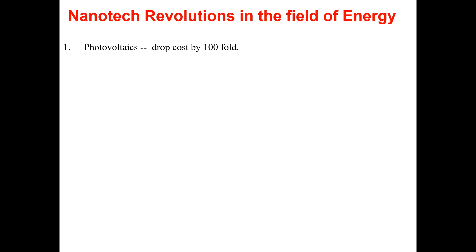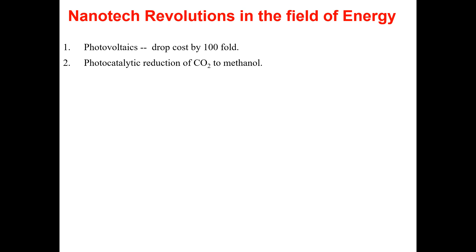For example, we have photovoltaics whose cost has been dropped by 10 to 100 times. Before the arrival of nanotechnology, we already had photovoltaics, but the prices were very high — very expensive. By the introduction of nanotechnology, the cost of photovoltaics dropped significantly. Similarly, we have photovoltaic reduction of CO2 to methanol, which has become possible by the use of nanotechnology.